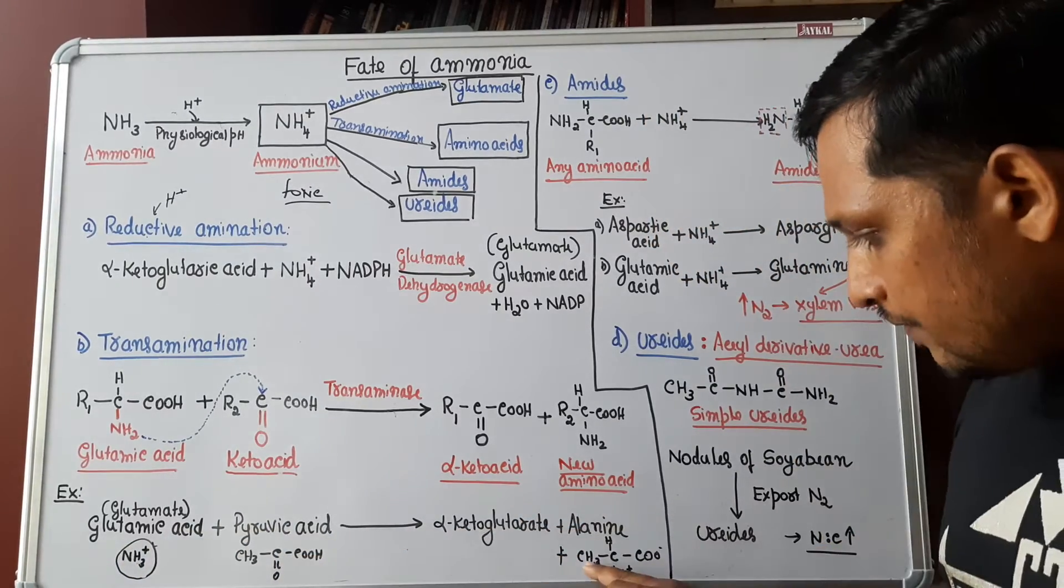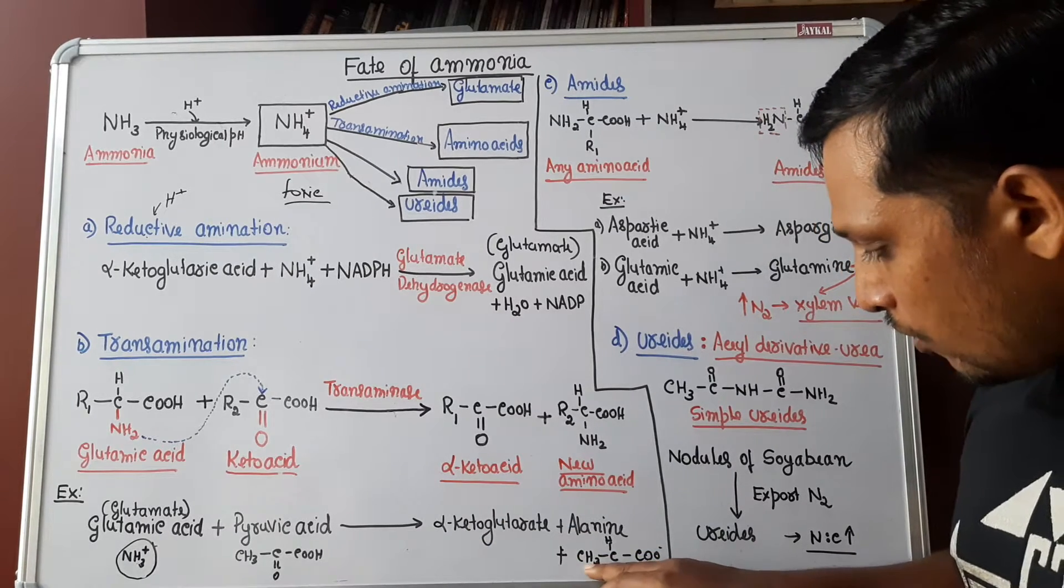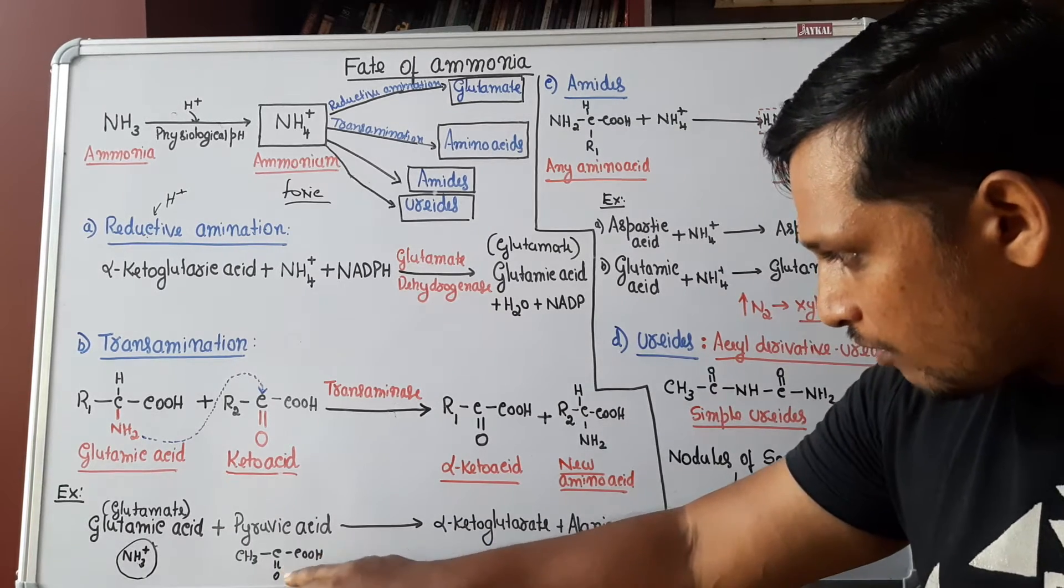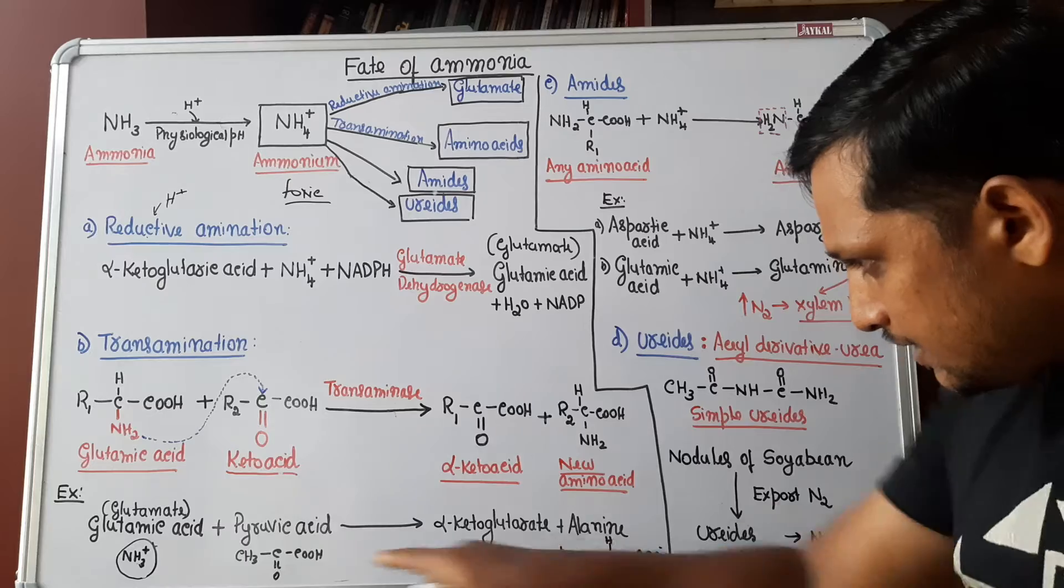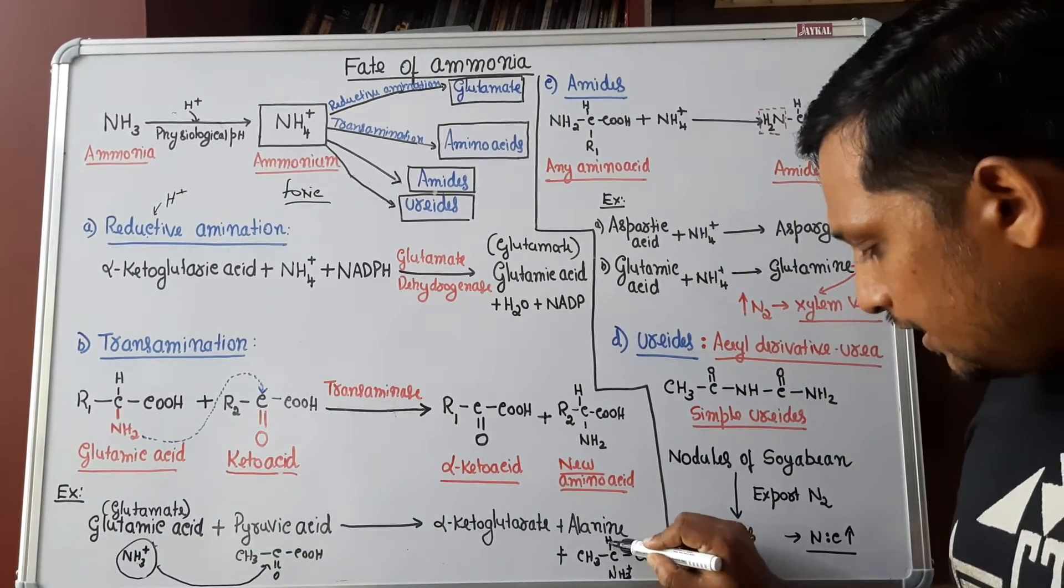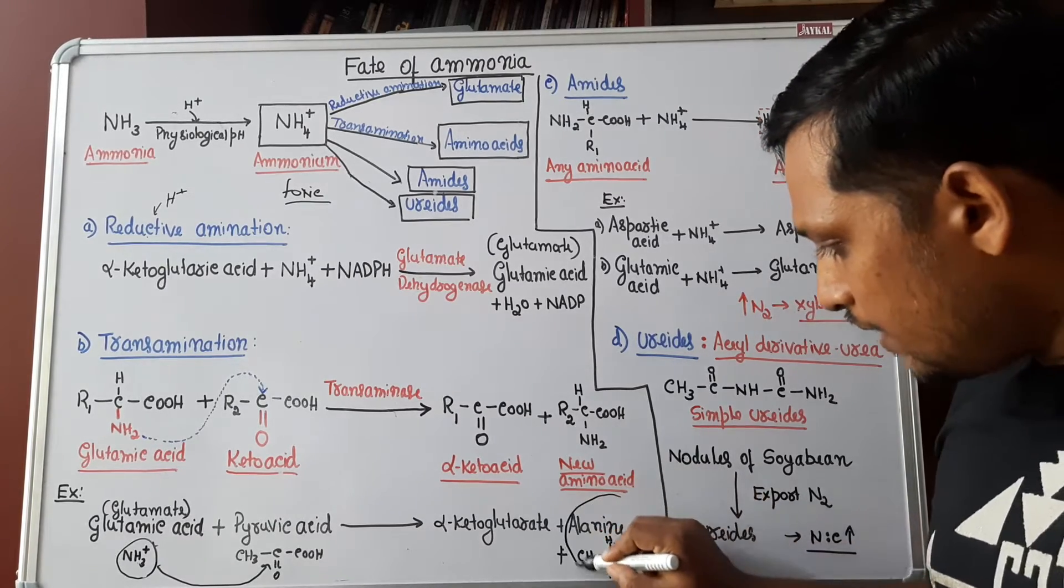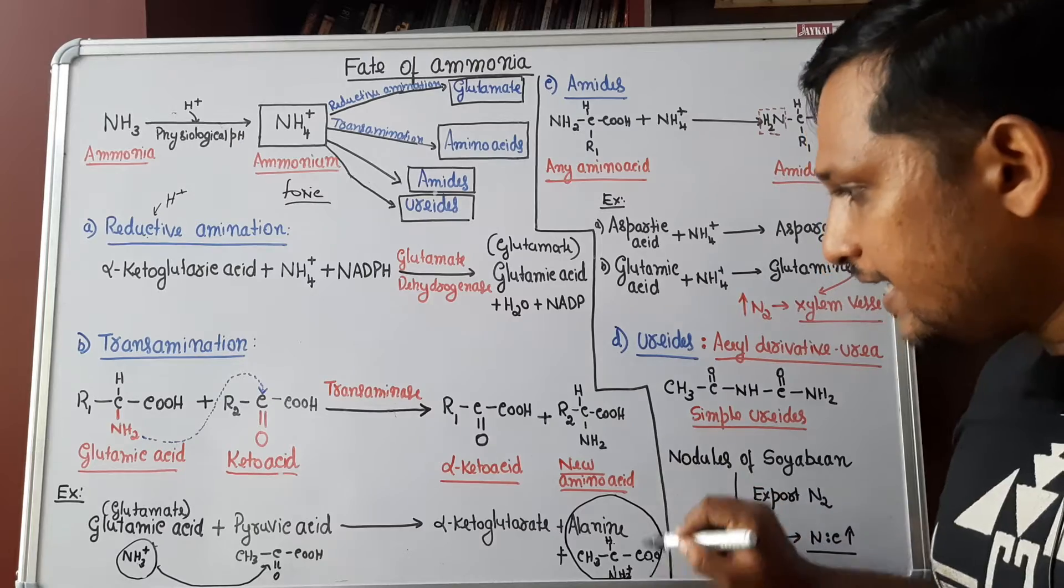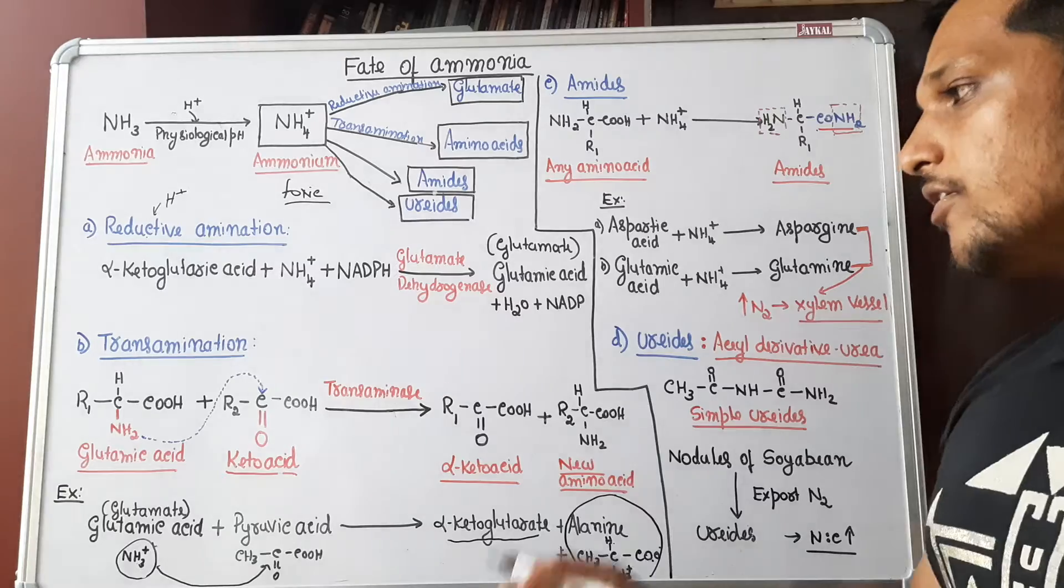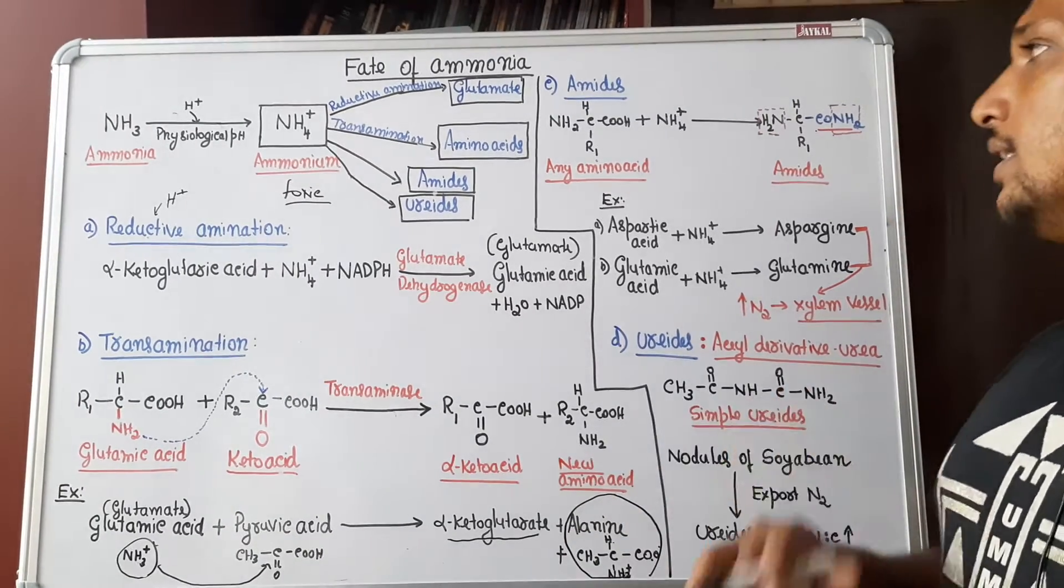Now, to ketoacid, when amino group is added, look at the compound form. CH3 is there, C is there. In place of keto group, now amino group is added. So NH3 from glutamic acid has come over here. NH3H and COO- or COH is formed. That is nothing but a new amino acid, alanine. Glutamic acid forms ketoacid that is alpha-ketoglutarate. This is known as transamination reaction by which plants will prepare other amino acids.